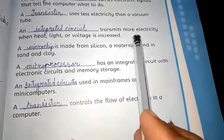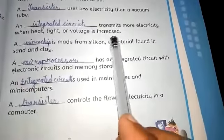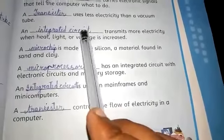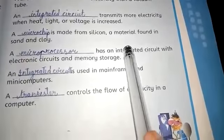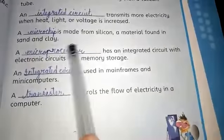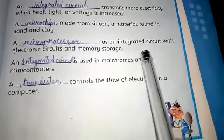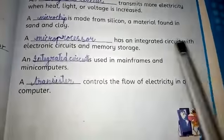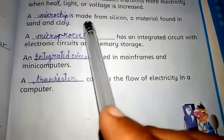A blank transmits more electricity when heat, light, or voltage is increased: integrated circuit. A blank is made from silicon, a material found in sand and clay: microchip. A blank has an integrated circuit with electronic circuits and memory storage: microprocessor.